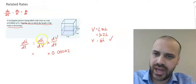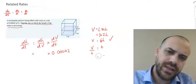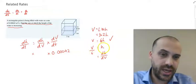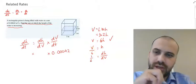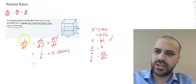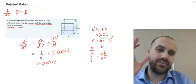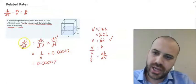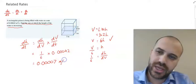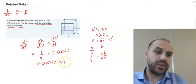If we want to know the derivative of h with respect to V, the easiest way is to make h the subject: h = V/6. So dh/dV equals 1/6. The change in height with respect to volume is 1/6, which means the change in height with respect to time equals 1/6 times 0.00042. It's vitally important to consider units at this stage: height is measured in metres and time in seconds, so the answer is in metres per second.